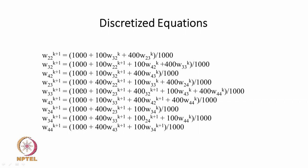In the second equation, w22 has already been evaluated at k+1 so we use that latest value. The value w42 is not yet known at k+1 so we use the k-th level. We substitute the old value of w33 and estimate the new value of w32. For w42, w32 is known at k+1, w43 is not so we use k. For w23, w22 is at k+1, while w24 and w33 remain at k. So we always use the latest available value.